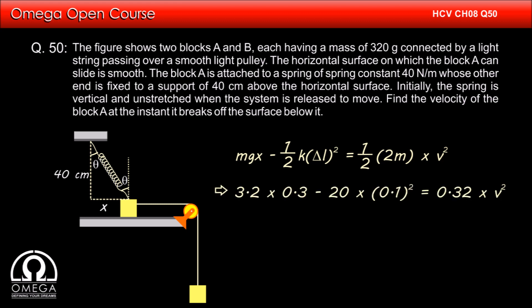Putting the values, we get 3.2 into 0.3 minus 20 into 0.1 square is equal to 3.2 into V square. On simplification, this becomes V square is equal to 3 minus 5 by 8 that is 19 by 8 which gives V is equal to 1.5 meter per second. This is our answer.